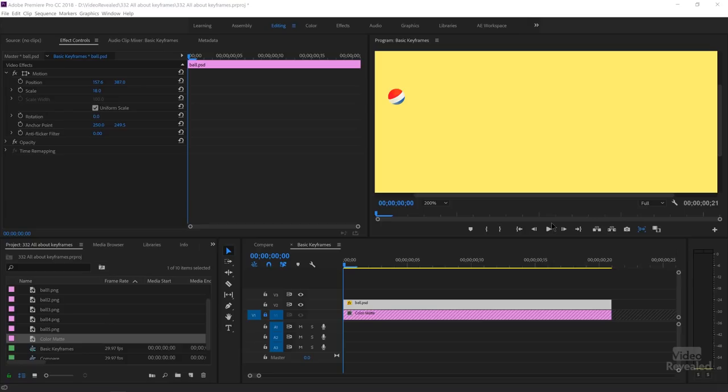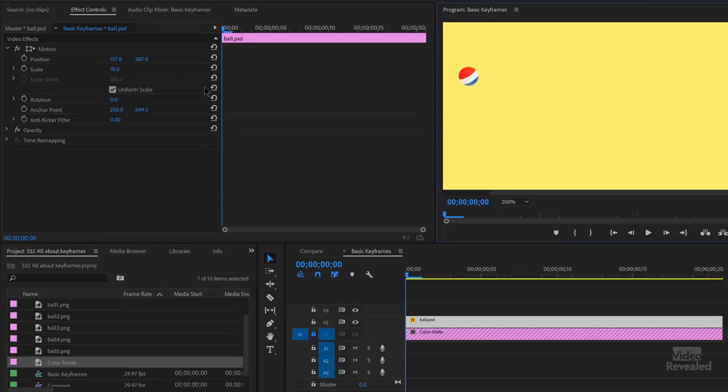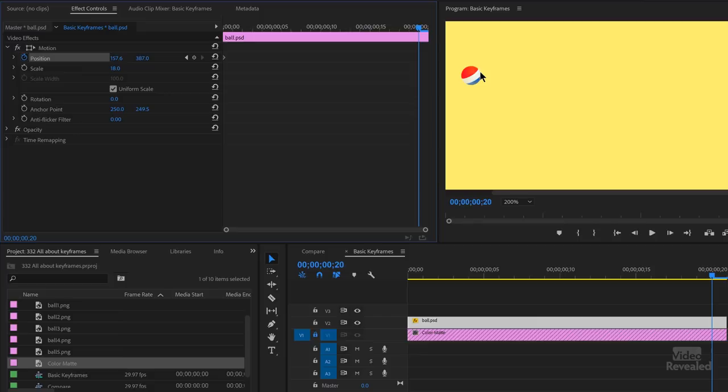I'm going to create a bit of motion from this shape right here in my effects controls. I'll create a position keyframe, move ahead, and when I click and drag this ahead, Premiere Pro creates a second keyframe, a linear one automatically.